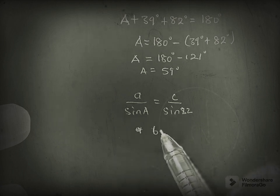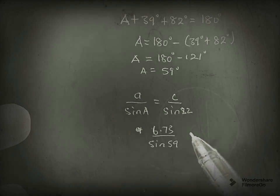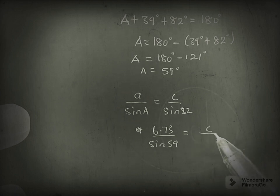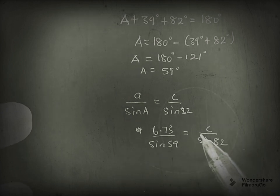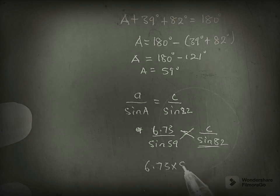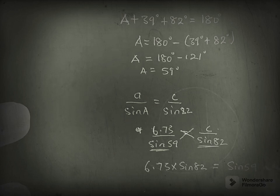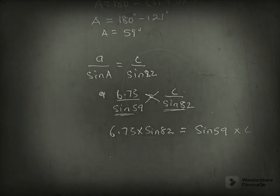By cross multiplying, we have 6.73 times sin 82 equals sin 59 times c. Now from here we can simply make c stand alone.